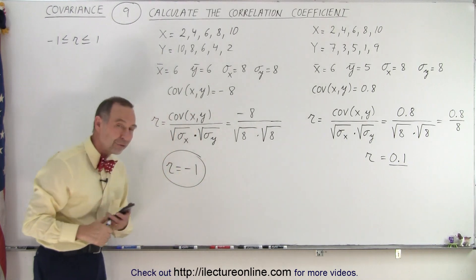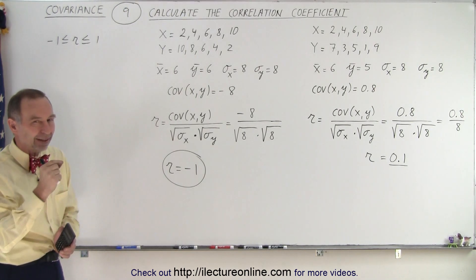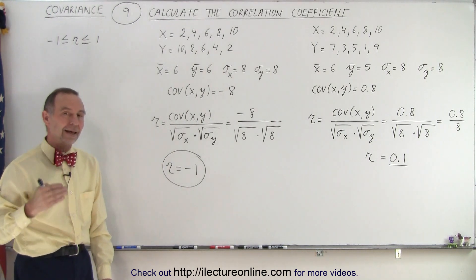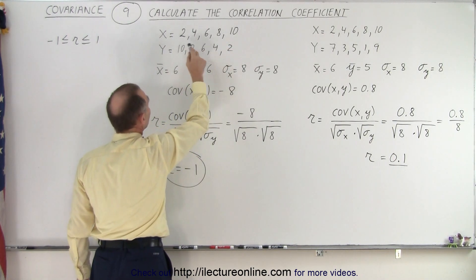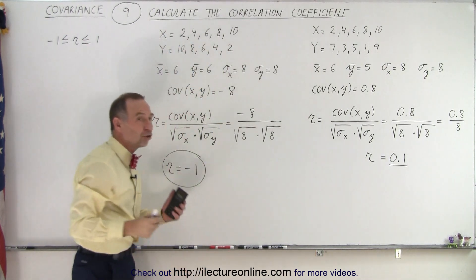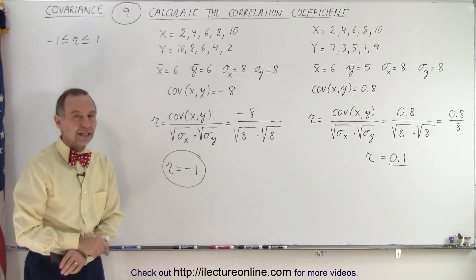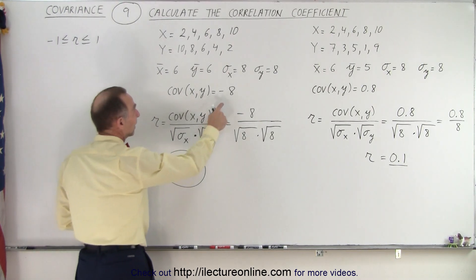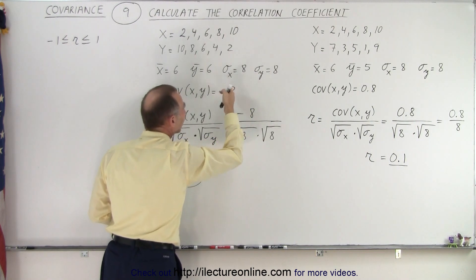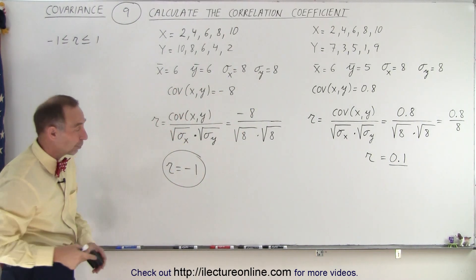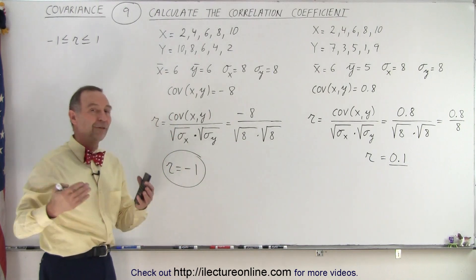Negative 1 means a perfect correlation, but with one data set increasing and the other decreasing. The method of increase on one data set is exactly the same as the method of decrease of the second. Looking at 2, 4, 6, 8, 10 and 10, 8, 6, 4, 2 — it's exactly the same kind of change, except one is increasing and the other is decreasing — so you would expect a correlation coefficient exactly equal to negative 1. The magnitude of the covariance being the same as the magnitude of the variances also gives an indication that you'd get negative 1. If the covariance were positive 8, you would get positive 1 — a very strong, perfect positive correlation.